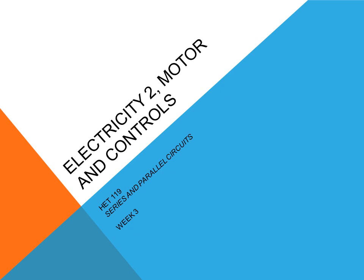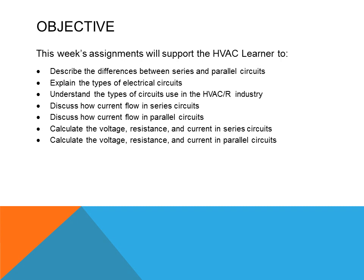This is AGT 119, week lesson. The objective of this week's lesson is to describe the difference between series and parallel circuits, explain the types of electrical circuits, understand the types of circuits used in the HVAC refrigeration industry, discuss how current flows in series circuits, discuss how current flows in parallel circuits.